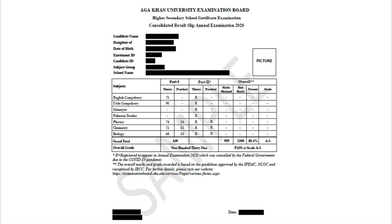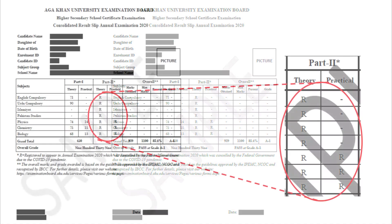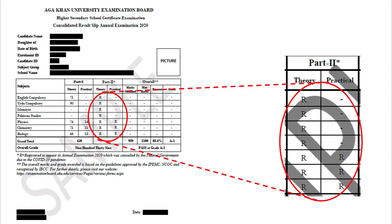For facilitation, we are sharing a sample of the results slip of regular students for HSSC Part 2 together with descriptions of the layout of the results slips. The results slip shown here is a sample where the letter R in Column Part 2 against each subject denotes that the candidate was registered to appear in Annual Examination 2020, which was cancelled by the federal government due to COVID-19 pandemic.